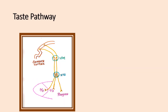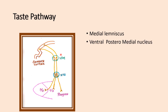The second-order neuron arises from the nucleus tractus solitarius and travels via the ipsilateral medial lemniscus to the ventro-postero-medial nucleus of the thalamus. So, the second-order neuron originates from the nucleus tractus solitarius, travels through the ipsilateral medial lemniscus, and terminates in the ventro-postero-medial nucleus of the thalamus.